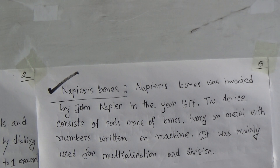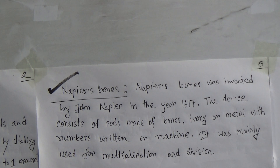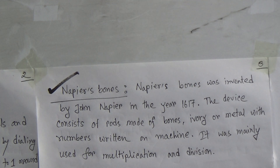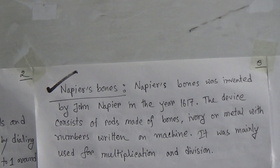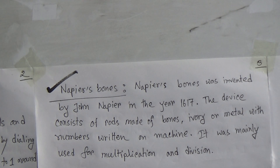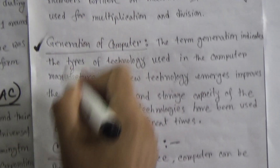Now, Napier's Bones. Napier's Bones was invented by John Napier in the year 1617. The device consists of rows made of bones, ivory, or metal with numbers written on them. It was mainly used for multiplication and division — just like Pascal's mechanical calculator, Napier's Bones was also used for multiplication and division.